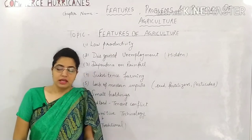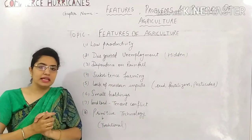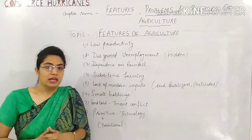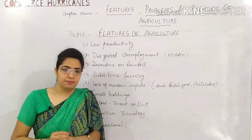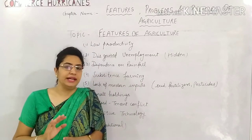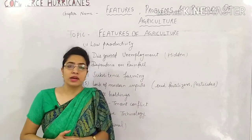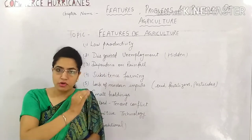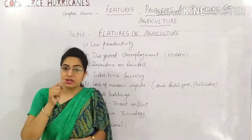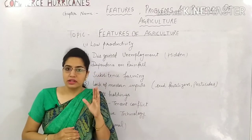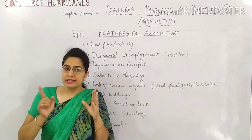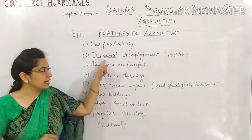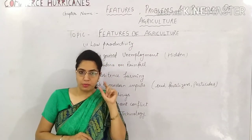Suppose there is a piece of land, and one family of ten people is working on it. The reality is that if only 5 people were actually needed, then the extra 5 people working there are in a sense unemployed. We call this disguised unemployment — berozgari that is hidden and not visible. This is one of the biggest problems in India's agriculture field.